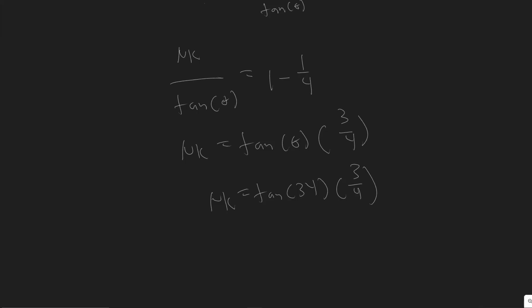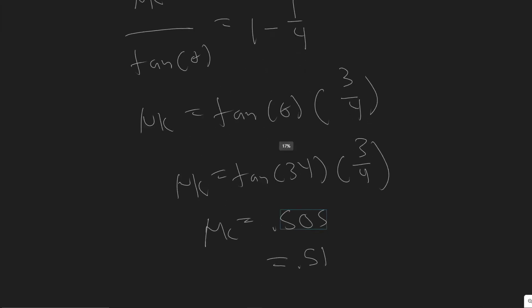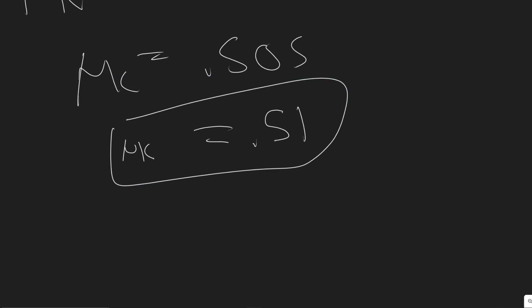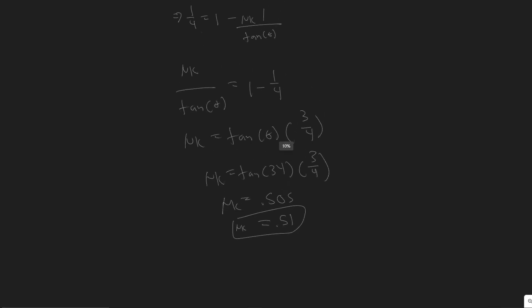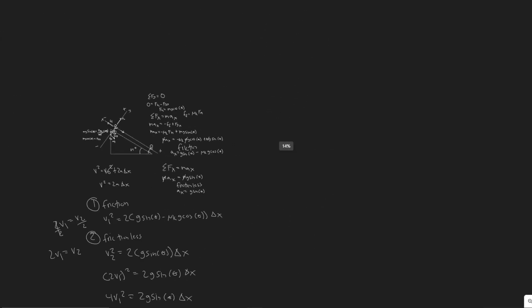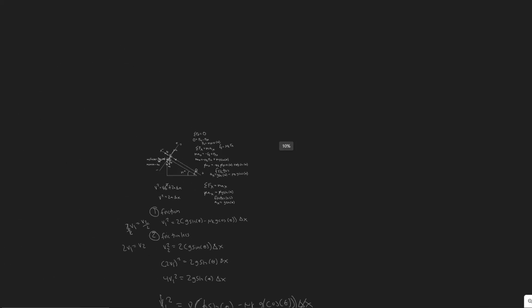Computing: μk = 0.75 × tan(34°) ≈ 0.505, which is approximately 0.51. There are no units because it is simply the coefficient of friction. So μk ≈ 0.51 is the answer.